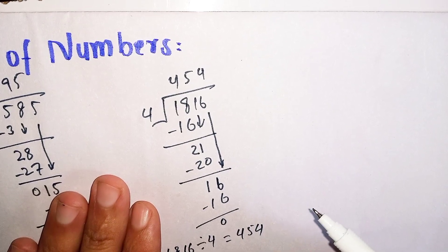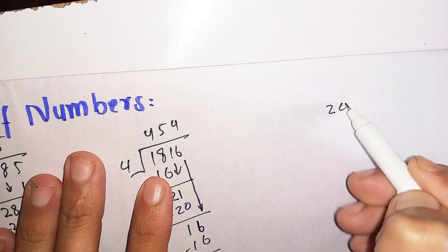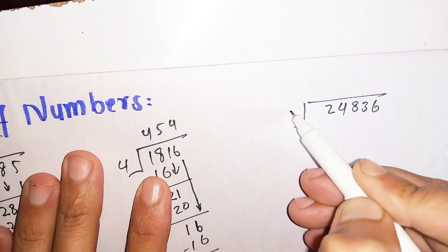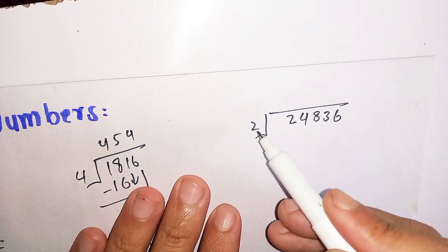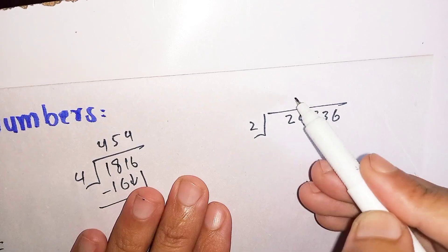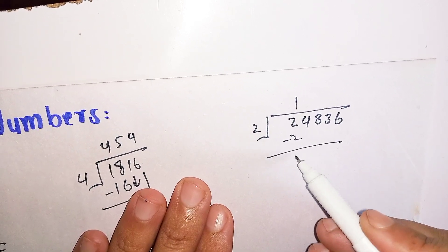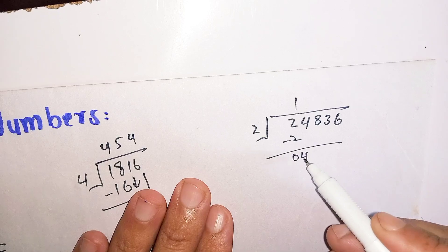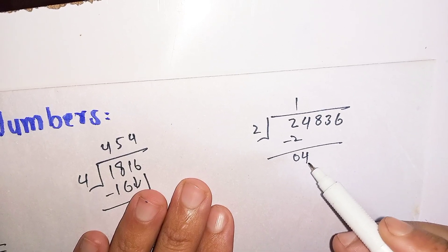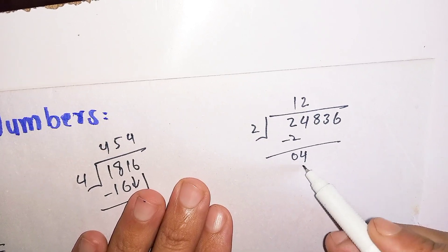Here is another example in which we are dividing a 4-digit number by a 1-digit number. We are dividing 24836 by 2. How many times does 2 go into 2? 2 times 1 is 2. Subtract 2 from 2, the remainder is 0. Bring down the 4 near 0. How many times does 2 go into 4? 2 times 2 is 4.